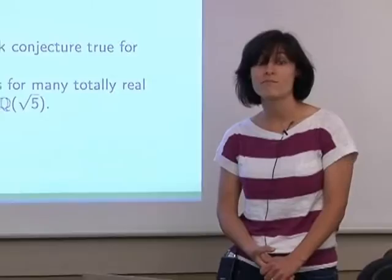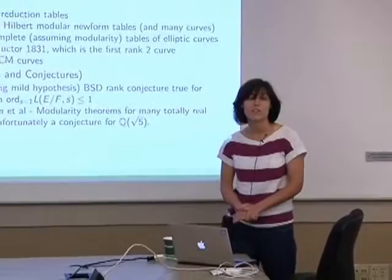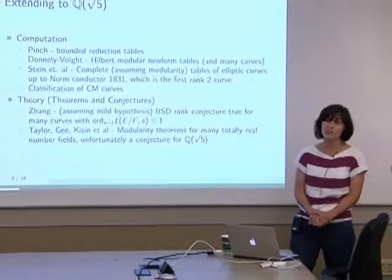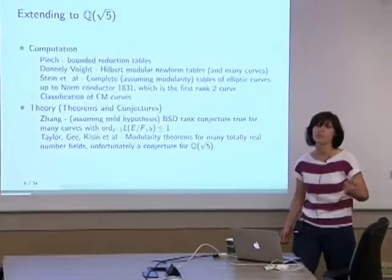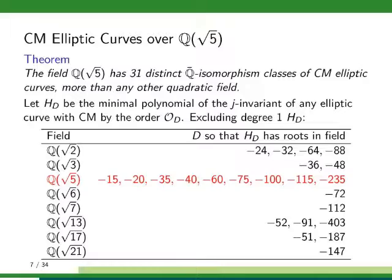Zhang has done a lot to generalize the work of Gross, Zagier, and Kolyvagin. Under some mild hypotheses, we actually have a similar theorem for the rank conjecture for many curves with rank ≤ 1. Unfortunately, not for Q(√5) specifically, but for many other totally real fields we do have modularity. A lot has been done towards proving it on a number field-by-number field basis.